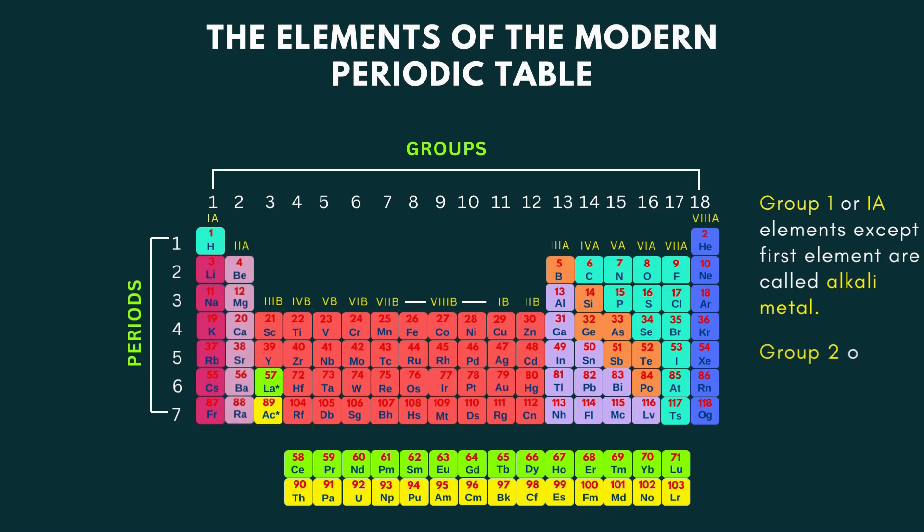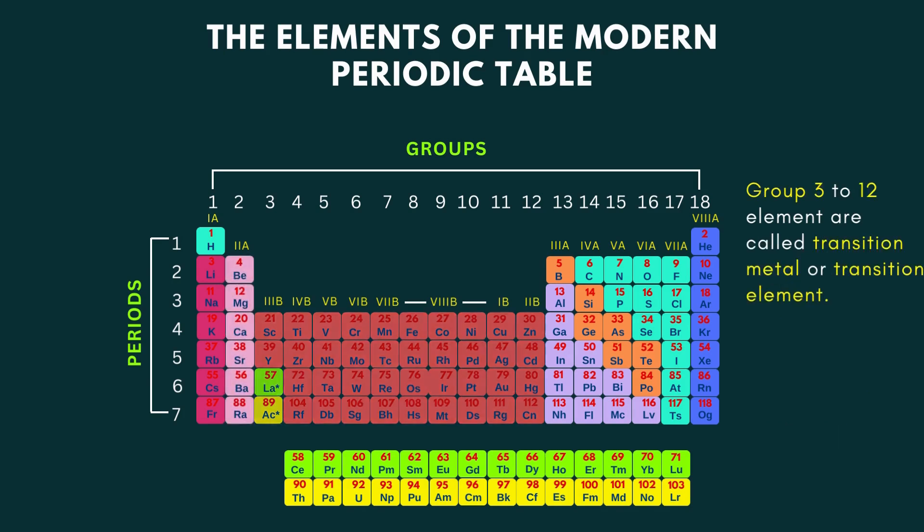All the group 2 elements are called alkaline earth metals. Group 3 to group 12 elements are called transition metals or transition elements.